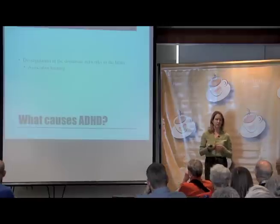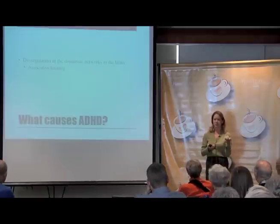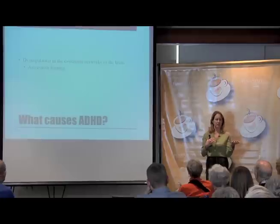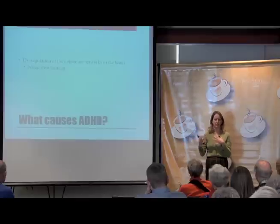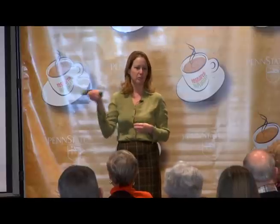One thing that dopamine helps us do is what we call associative learning — being able to put cause and effect together. If this happens, then this happens, and those things are related. Making that connection that I have a behavior and the consequence is related to my behavior is a learning process that is regulated by dopamine regions of the brain.